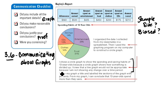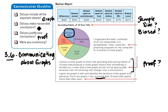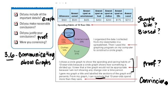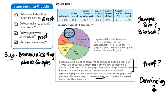She does have the details: she gave her graph a title and labeled the sections. She concludes that 13-year-olds spend more than they save, but where's her proof? She makes that conclusion with no actual proof and no other conclusions. She never mentions at all that she needs an increase in her allowance based on this information, so she never actually answers the original question.